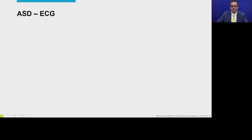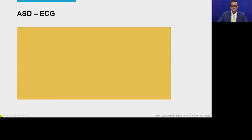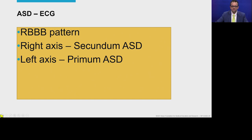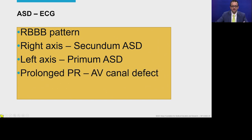In summary, ASD ECGs have a right bundle branch block pattern but not a true right bundle branch block. If there is right axis deviation, think ostium secundum ASD. If there is left axis deviation, think ostium primum ASD — those patients will also have a slightly prolonged PR interval. Whenever there is a prolonged PR interval, think of a defect at the level of the AV septum — consider primum ASD along with some sort of AV canal defect. Atrial arrhythmias are common in these patients. Thank you very much.